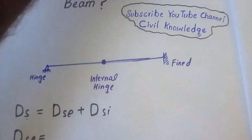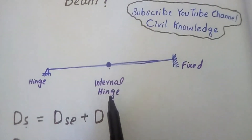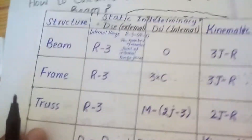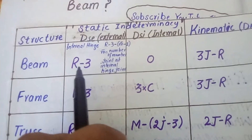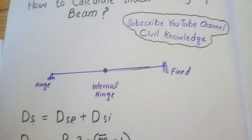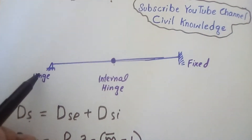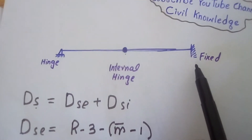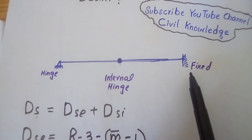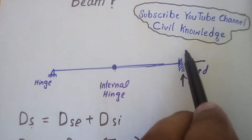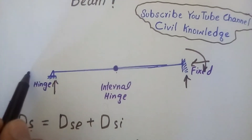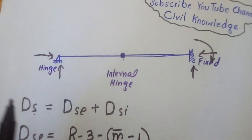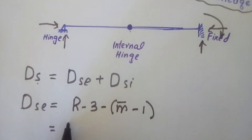As there is one internal hinge in our question, we will use the formula R − 3 − (M' − 1) rather than the simple formula. There is a hinge support and a fixed support. As we know, a fixed support gives three reactions — vertical, horizontal, and moment — while a hinge support gives two reactions — vertical and horizontal. So there are five reactions total.